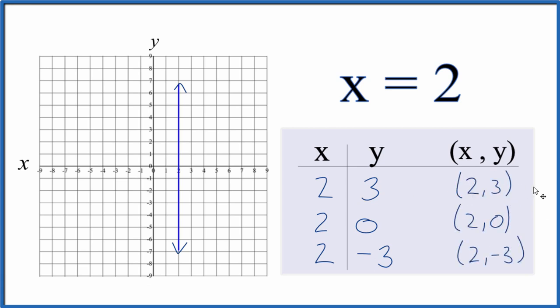And so we can graph these points. We go to x is 2, y is 3. So x is 2, y is 3. We go to x is 2, y is 0. And we go to x is 2, y is negative 3. So all of these points, they're right here on our line.